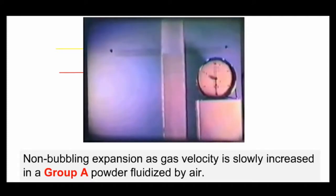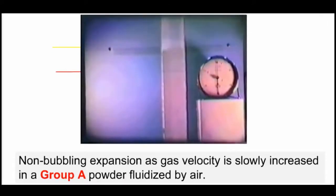The bed expands by about 80mm before the first bubbles appear. So there is a range of gas velocities between UMF and UMB for which non-bubbling fluidization occurs.